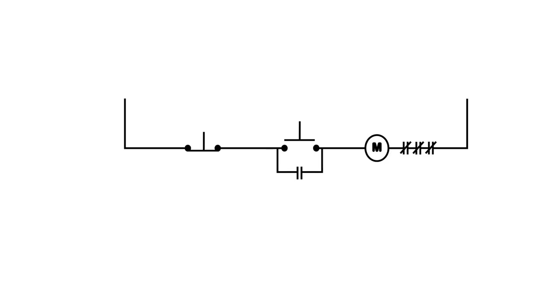We're going to cover schematic and wiring diagrams, and show you how you can use a schematic diagram to wire up a device or to create a wiring diagram. We have here our basic start/stop push button with an M coil, M contacts, and overload contacts. We're going to show how we can use this circuit to actually wire up a physical circuit.